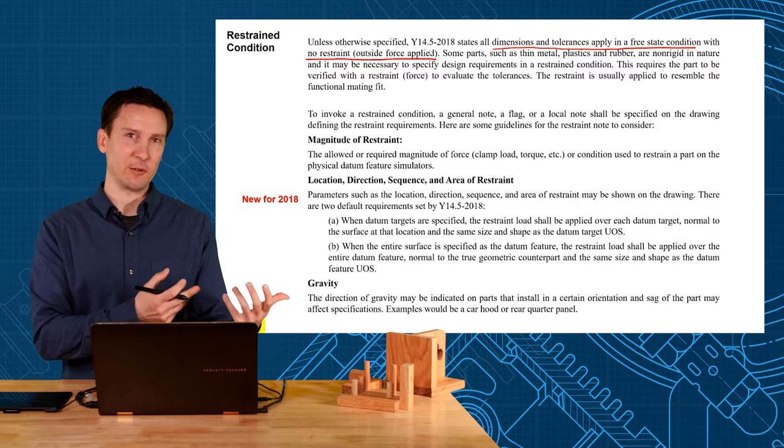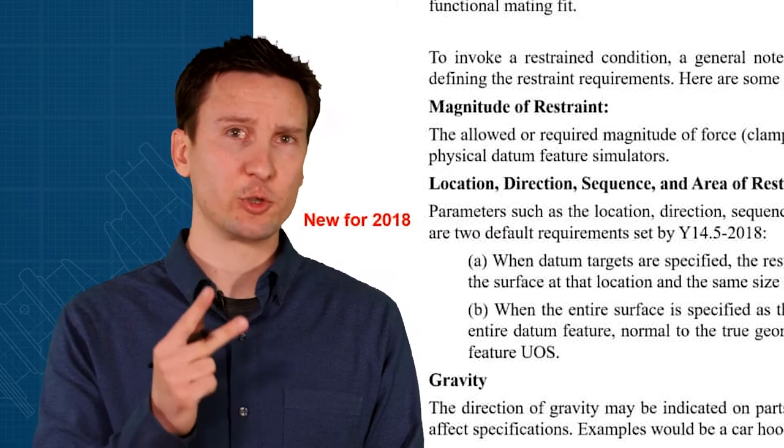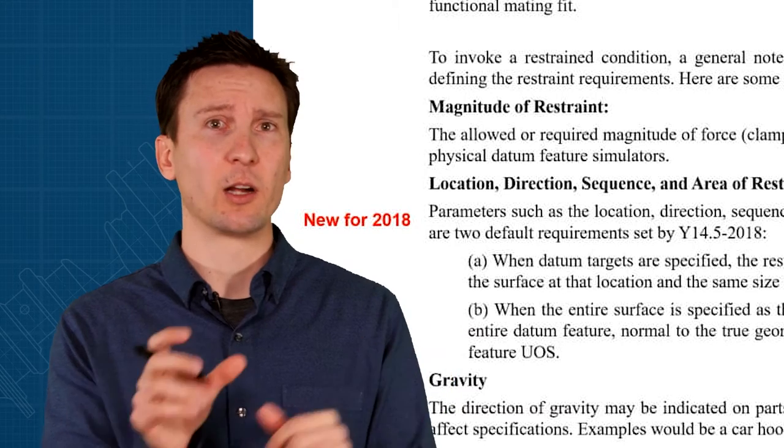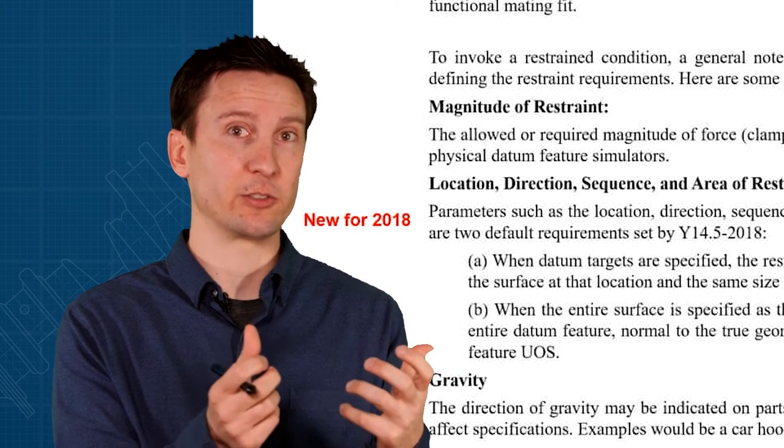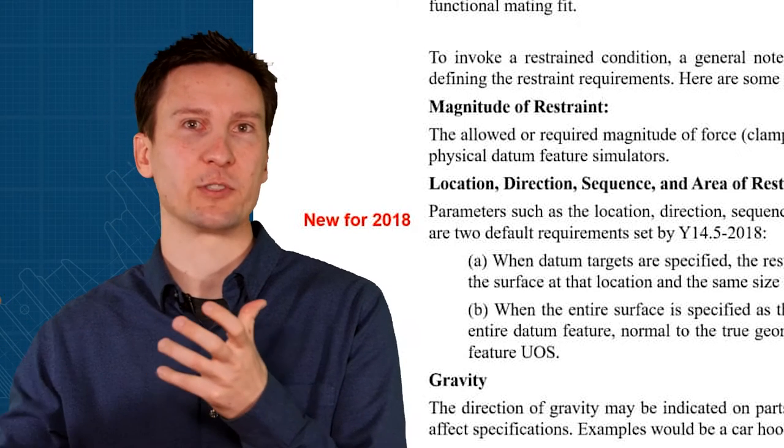Now if you want an outside force to be applied during measurement you have to add that restraint note. Now don't get those two words mixed up, restrain and constraint. Constrain is just eliminating the six degrees of freedom. Restrain is going beyond that and applying an outside force.